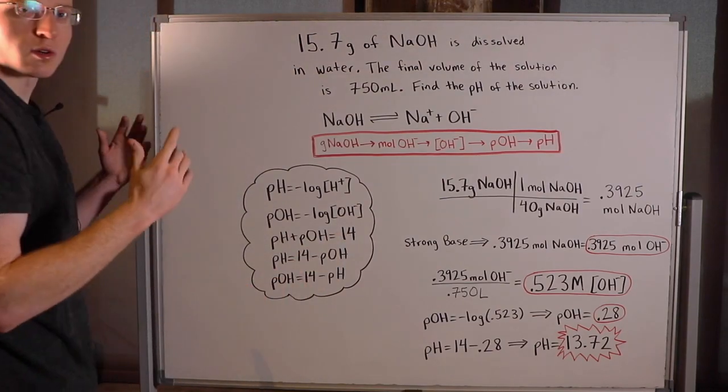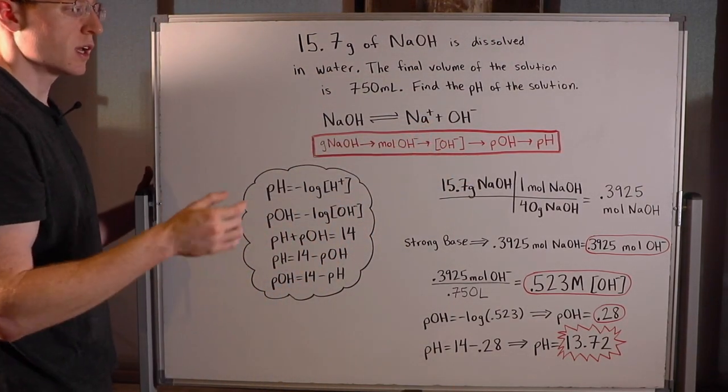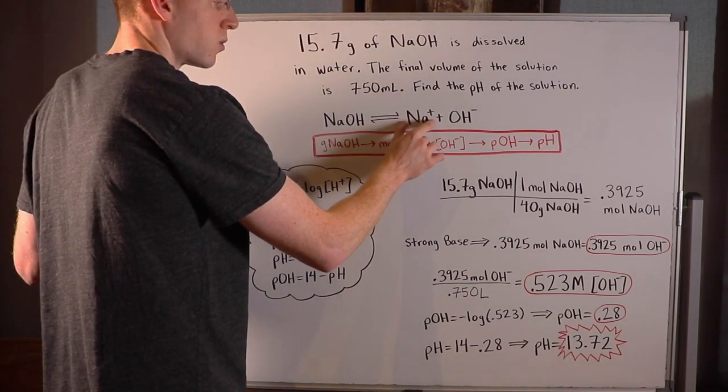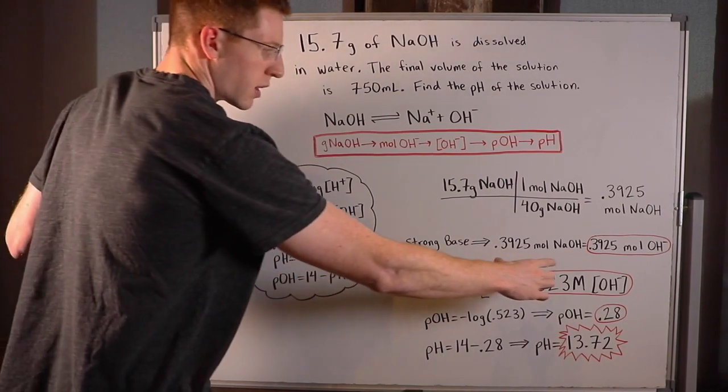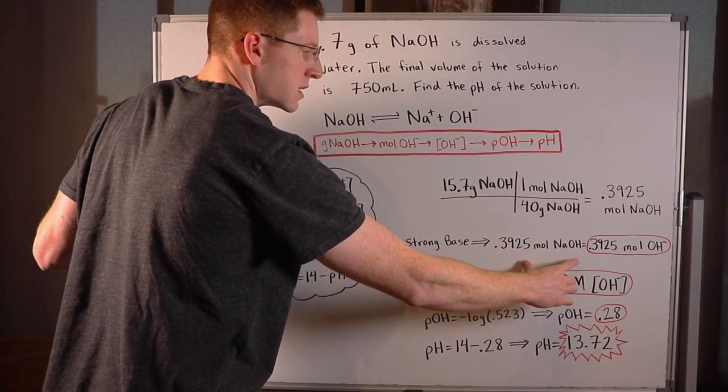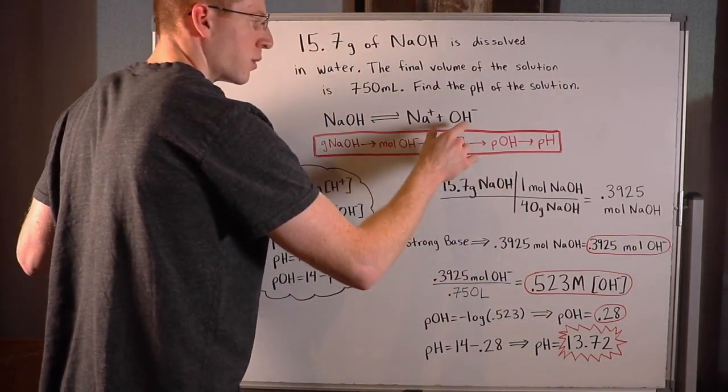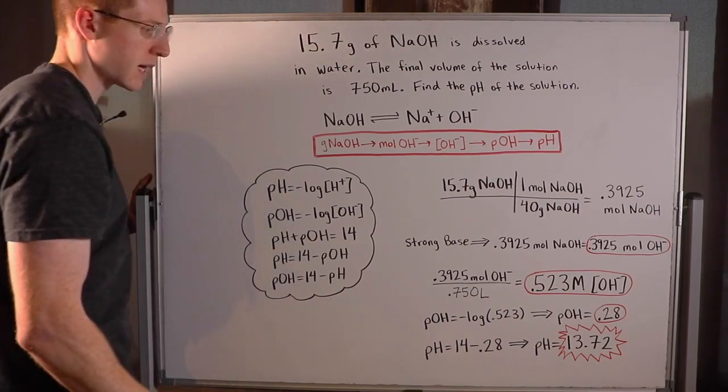Because NaOH completely dissociates into its ions, Na plus and OH minus. Notice how I'm not worried about the sodium ions at all in this problem. That's because they don't affect the pH. When you're interested in pH, don't worry about Na plus ions. Just worry about the hydroxide. So 0.3925 moles of NaOH means that we're going to have 0.3925 moles of OH minus because it completely dissociates into its ions.